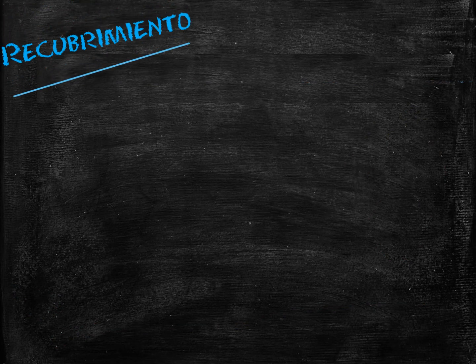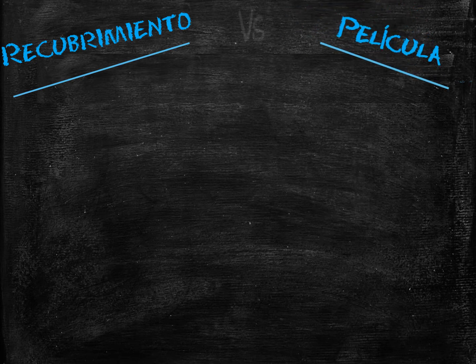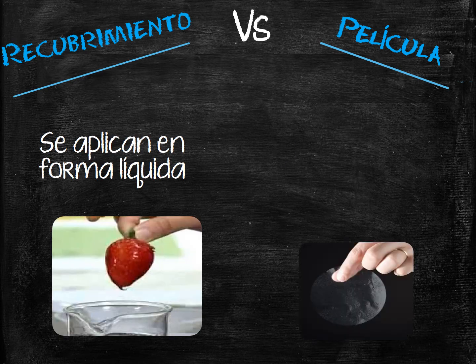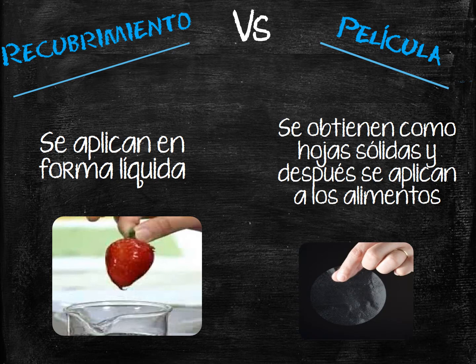What is the difference between an edible film and an edible coating? The main difference is that edible coatings are applied in liquid form on the food, usually by immersing the product in a solution generating a substance formed by the structural matrix — carbohydrate, protein, lipid, or multi-component mixture — while edible films are first molded as solid sheets, which are then applied as a wrapping on the food product.